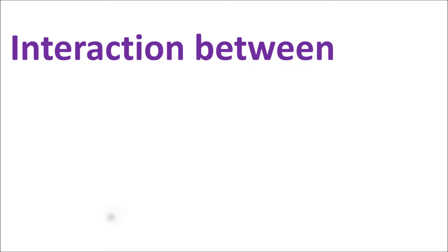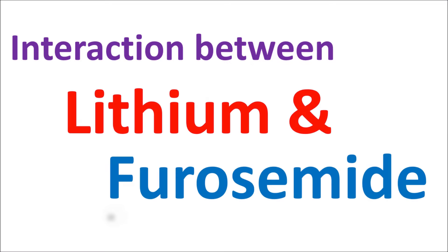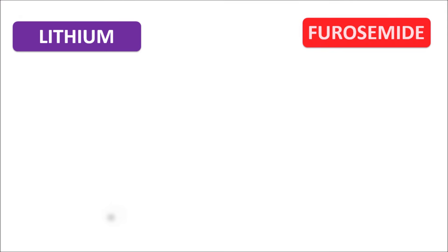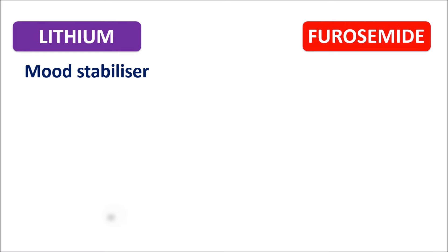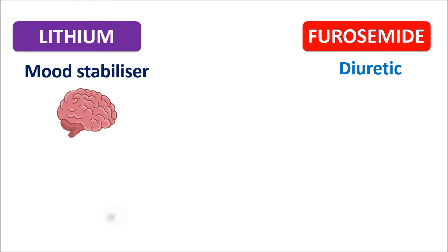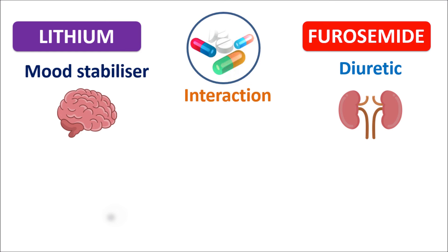Today in this video we are going to discuss the interaction between lithium and furosemide. Lithium and furosemide are two drugs belonging to different clinical categories. Lithium is a mood stabilizer classified as an anti-manic agent, whereas furosemide is a diuretic. Both drugs are different — lithium acts on the CNS whereas furosemide acts on the kidney — yet an interaction still exists between them.